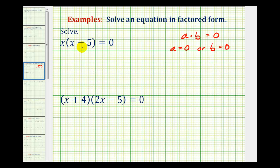So if we take a look at our first example, we have x times the quantity x minus five is equal to zero. So we're multiplying two things together and the product is equal to zero. So either the first factor must equal zero or the second factor must equal zero.